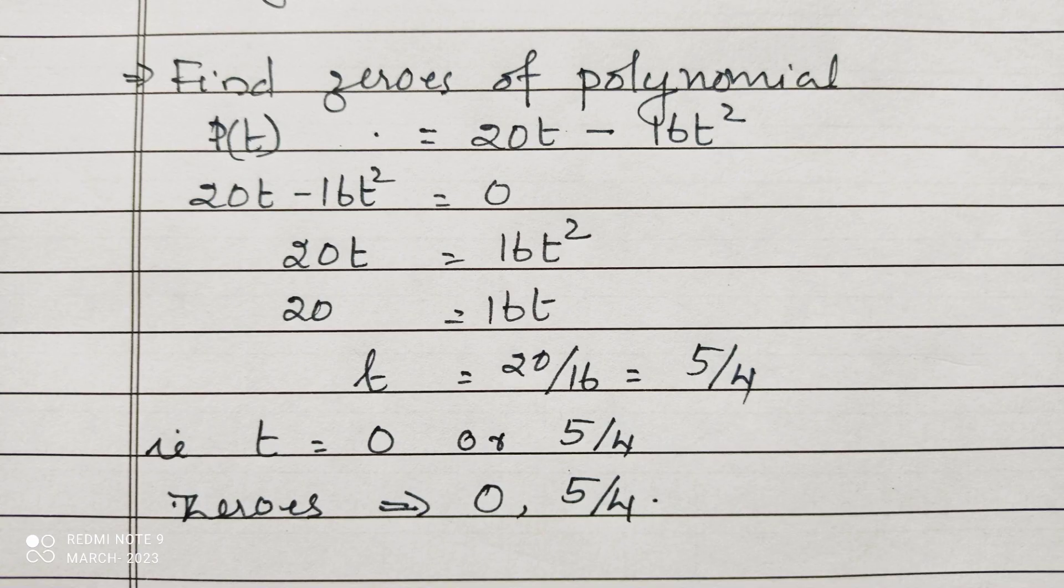The polynomial is p(t) = 20t - 16t². We are equating it to 0. Then 20t - 16t² = 0.